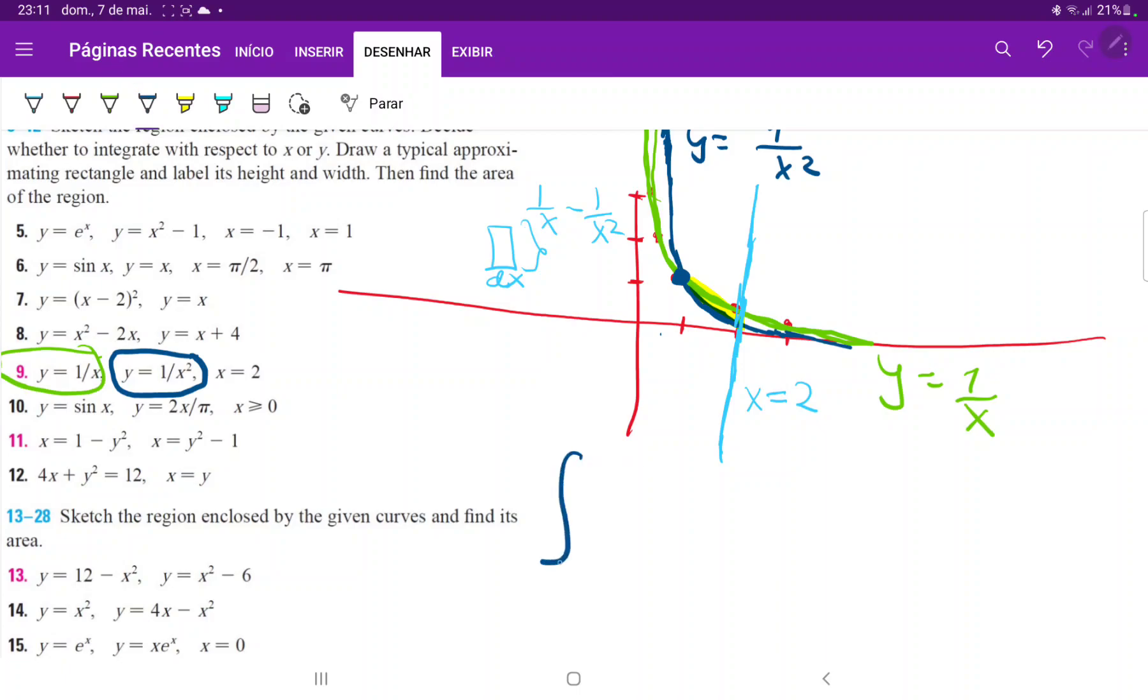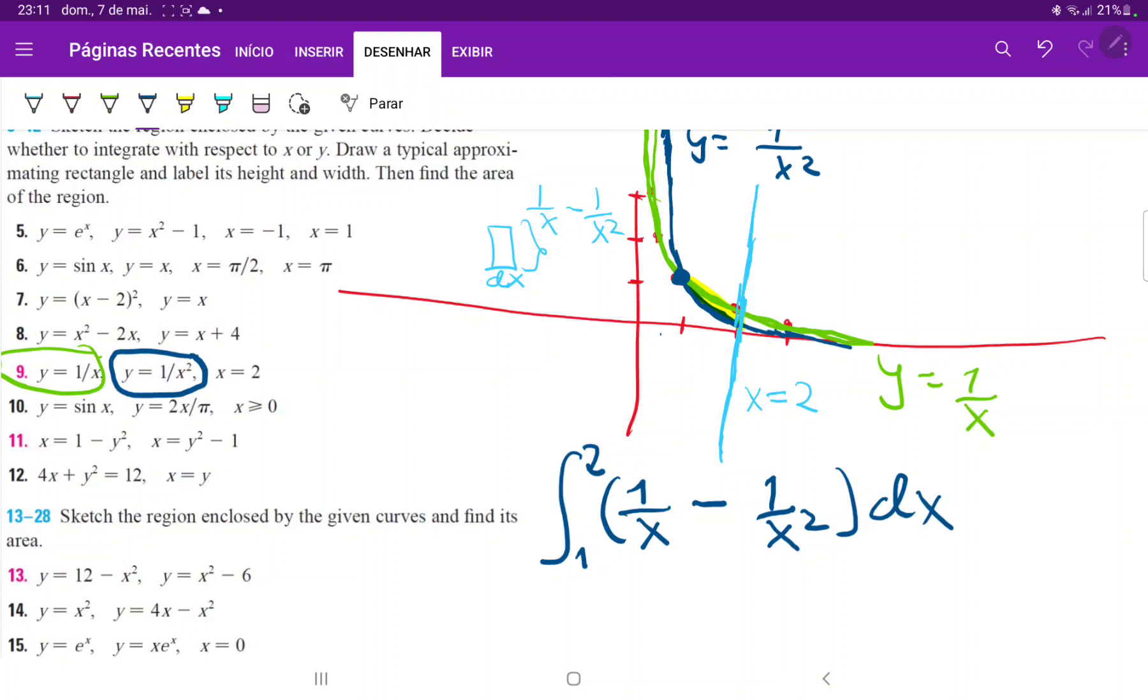So we can very comfortably set up this integral. It goes from 1 to 2, and it is the integral of the upper function, which is 1 over x, minus the lower function, which is 1 over x squared, and all of this times dx. We cannot forget this because we're multiplying by the width, or else we don't have an area.